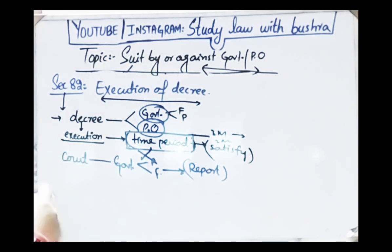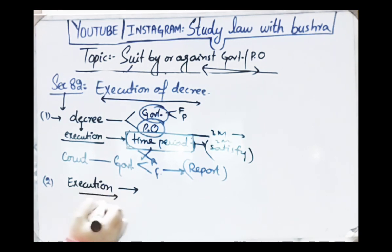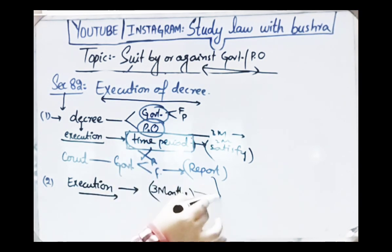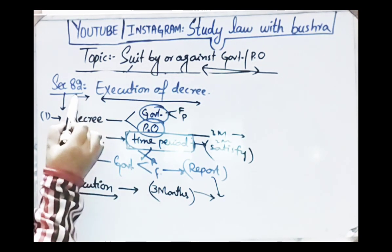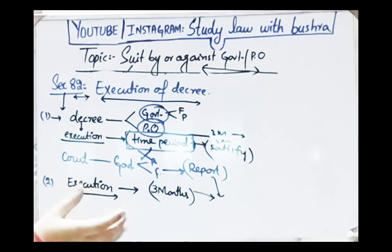When the court has sent the matter to the government and sent them the report to examine the case, subsection 2 states: the execution shall not be issued on any such decree unless it remains unsatisfied for a period of 3 months computed from the date of such report. So after the report is sent to the government, if within three months the decree is still not satisfied, the court will then start its own execution. After sending the report, the court waits 3 months; if the decree is still not satisfied within 3 months, the court proceeds with execution.